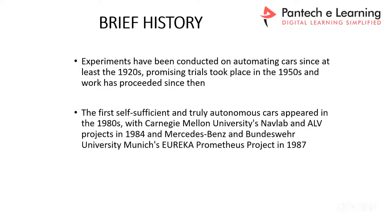Experiments have been conducted on autonomous cars since at least the 1920s. Promising trials took place in the 1950s and have proceeded since then. The first self-sufficient and truly autonomous car appeared in the 1980s at Carnegie Mellon University — the NAVLAB and HALP project in 1984 — and at Bundeswehr University with a NAVLAB and HALP project in 1987. These are the old versions of autonomous driving systems.